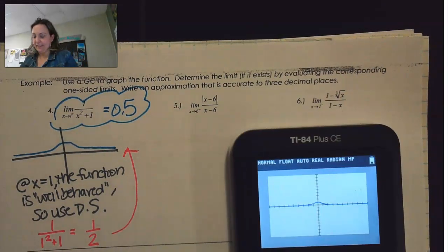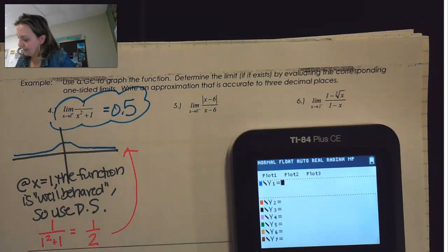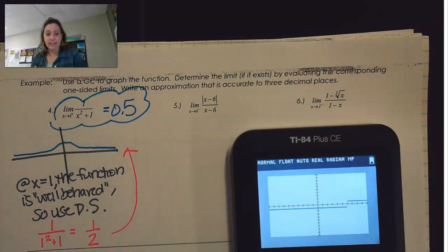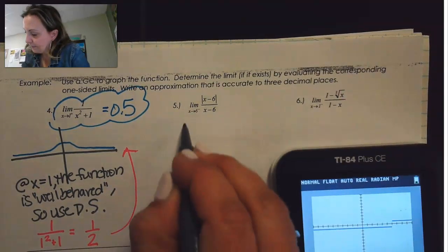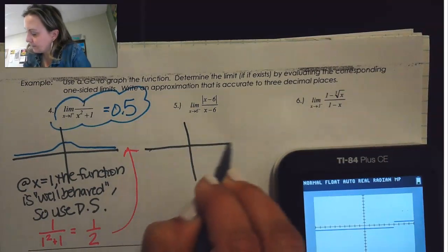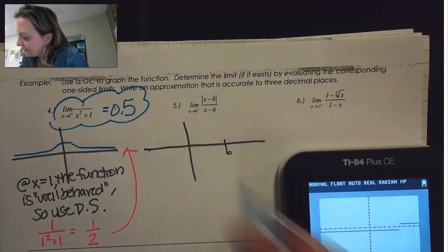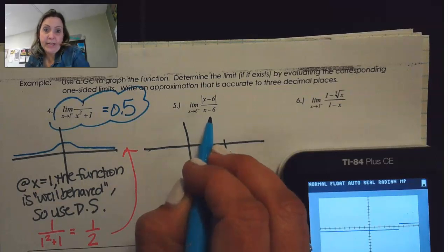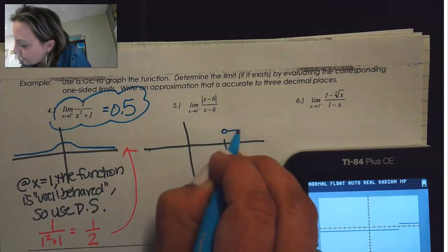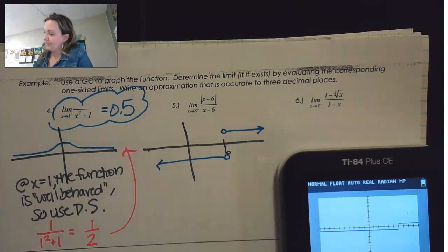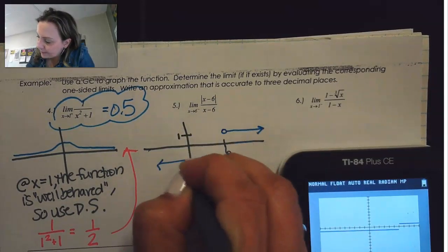Number 5: we have the limit of the absolute value of x minus 6 divided by x minus 6. If I graph this, here's where x equals 6. I know that if I put 6 in that's going to be an issue. I have an open circle going to the right, and here I have an open circle going to the left. It looks like this is at 1 and this is at negative 1.